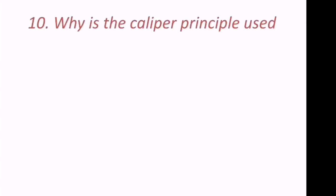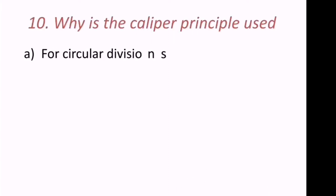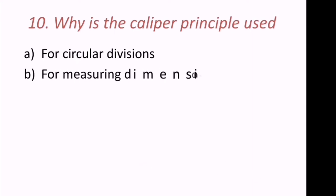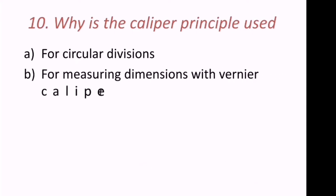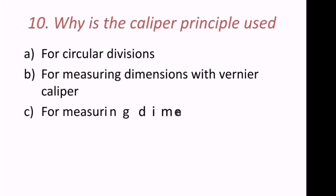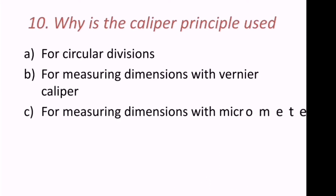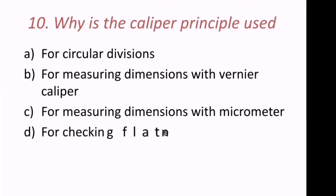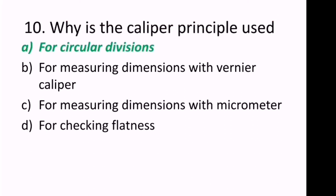Tenth question: Why is the caliper principle used? The options are for circular divisions, for measuring dimensions with vernier caliper, for measuring dimensions with micrometer, or for checking flatness. The caliper principle is used for circular divisions — A is the correct answer.